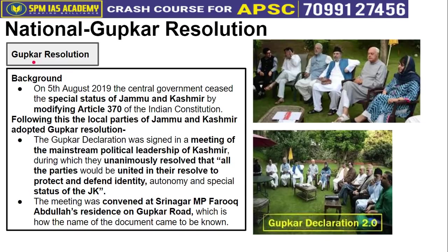To understand this, let's first understand the background. On 5th August 2019, the Central Government ended Jammu and Kashmir's special status by modifying Article 370 of the Indian Constitution, and also redefined J&K's political structure — it was previously a state, and was converted into a union territory. After this, the local political parties of Jammu and Kashmir — mainly the National Conference and then PDP — together adopted a resolution called the Gupkar Resolution.